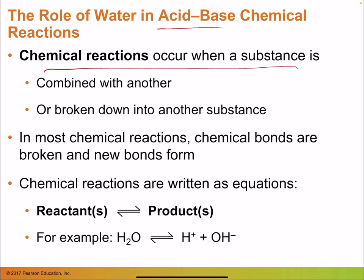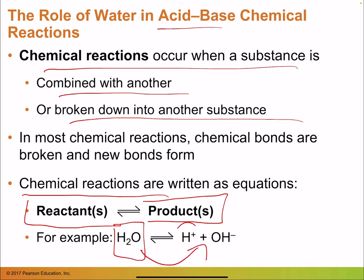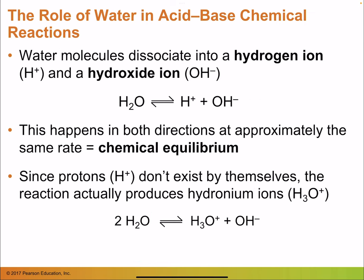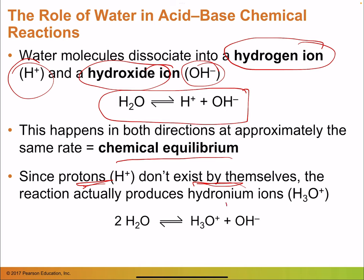Water is also relevant to acids and bases. Chemical reactions occur when substances are combined and broken down. For example, H₂O can be broken down into H⁺ and OH⁻. When water molecules disassociate into a hydrogen ion and a hydroxide ion, this happens in both directions forming a chemical equilibrium. Since protons don't like to be alone, they always create hydronium ions — so two water molecules disassociating give a hydronium ion and a hydroxide ion.